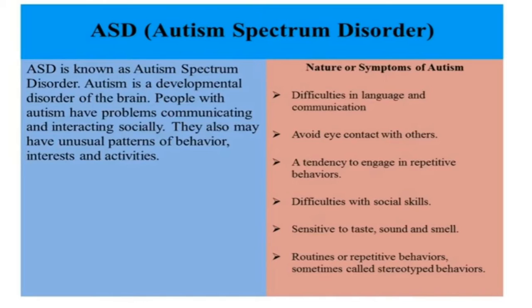Now we will see ASD — Autism Spectrum Disorder. It is a disorder that affects development. The word spectrum refers to the range of symptoms and their severity. Young children with ASD have difficulties with communication, language, social skills and behavior. Spectrum disorders are characterized by social interaction difficulties, communication challenges and a tendency to engage in repetitive behaviors. They repeat words and actions, feel difficulties expressing their needs and emotions, and are very sensitive to taste, smell and sound.